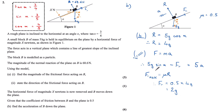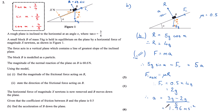With sin alpha = 3 fifths, I substitute into the F = ma equation: 5g × 3 fifths minus 2g = 5a, giving 3g minus 2g = 5a, so g = 5a. Dividing by 5, the acceleration is 1.96 metres per second squared.